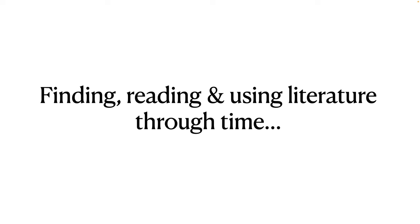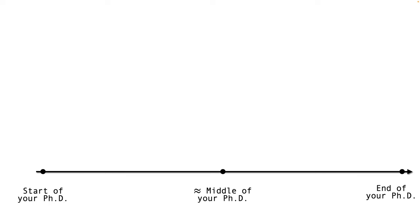And finally, let's look at staying on top of literature from the perspective of the entire PhD. So let's see how these three subtasks evolve throughout the PhD. So finding literature, reading literature and using the literature. So let's say that this timeline is your PhD. This is the start of your PhD. This is the end of your PhD. And this is somewhere in the middle of your PhD. And on the vertical axis, we'll put the amount of effort that you spend on each subtask.